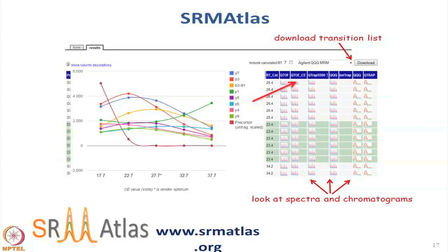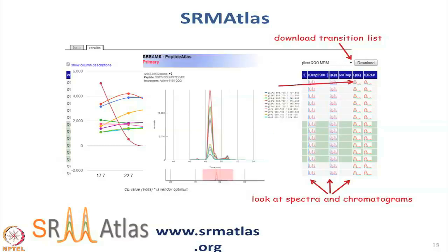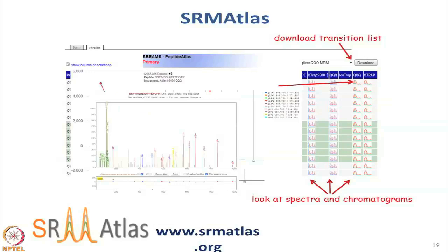We looked at all these different collision energies — for any given protein fragmentation there is an optimal collision energy. You can see the behavior of the fragment ions as collision energy changes. This is an example of a chromatogram you get by following one of these links, and you can also see spectra in there.